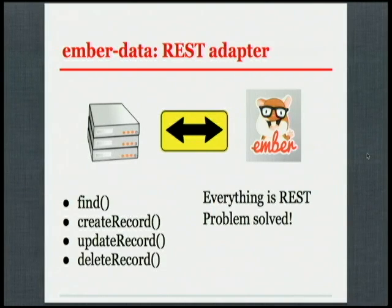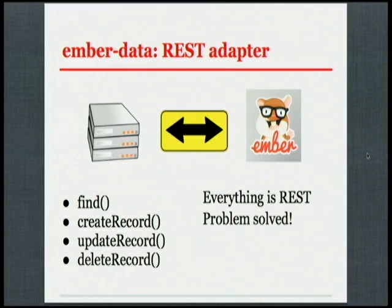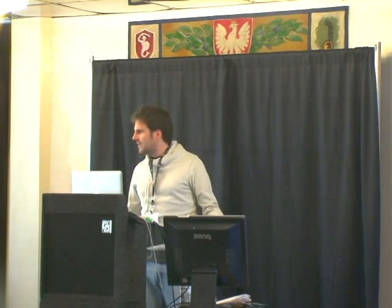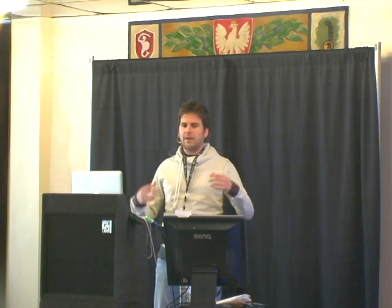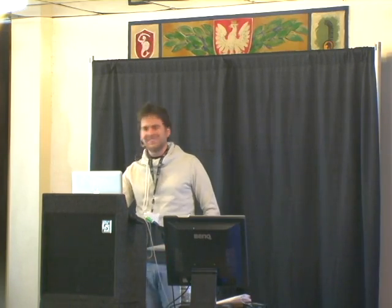The other part of Ember Data, beside the models, is the adapter — the REST adapter. It works both ways: it takes your JavaScript objects, serializes them, and sends them to the backend. In the same way, when it receives JSON from the backend, it converts it to objects in the JavaScript part. You have methods like find, createRecord, updateRecord — it's obvious what they do. So let's put everything together. Everything is REST; our problem is solved; everything has beautiful defaults. No.